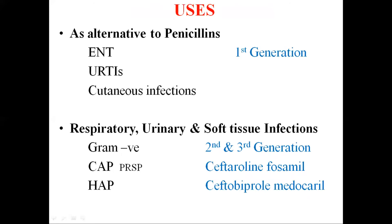Coming to the uses of cephalosporins: as an alternative to penicillin, they are used in ENT infections, upper respiratory tract infections, and cutaneous infections — mostly first generation cephalosporins are preferred. For respiratory, urinary, and soft tissue infections caused by gram-negative organisms such as Klebsiella, Proteus, or Enterobacter, second generation cephalosporins like cefuroxime or third generation cephalosporins like cefotaxime and ceftriaxone are preferred.